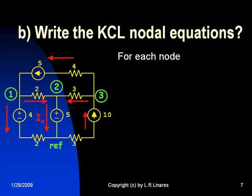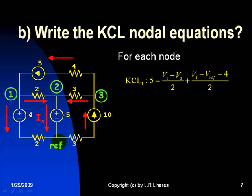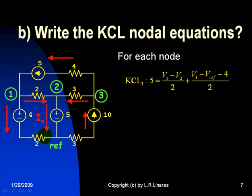Let's begin with node number one. KCL for node number one: currents that go in, 5 amps, plus currents that come out, V1 minus V2 over 2, and V1 minus V reference minus 4 volts over 2.